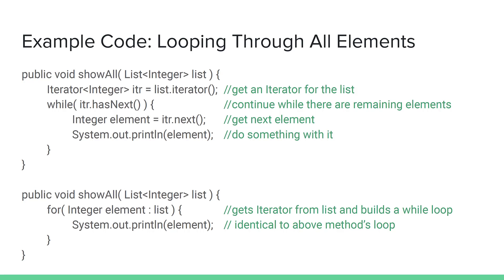The second version of this method is functionally identical to the first — we're just using the for-each loop, which hides a lot of the details behind the scenes. A for-each loop requires that you pass in an iterable collection. The first thing a for-each loop does is call that iterable object's iterator method and get back an iterator. It then sets up a loop identical to the first method: a while loop as long as the iterator's hasNext is true, getting the next element and assigning it to the variable at the beginning of the for-each loop — integer element. So these two methods are both using the iterator to navigate through the list and are functionally identical.